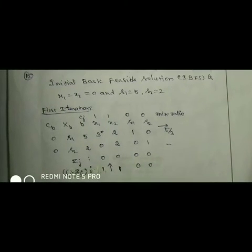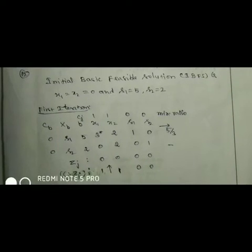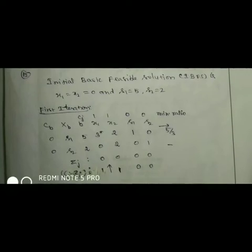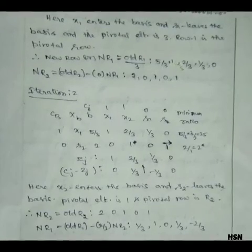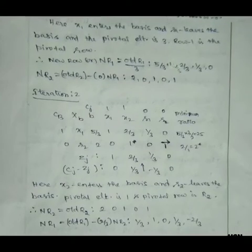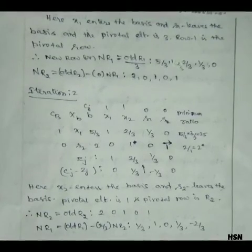The initial basic feasible solution is x1 equal to x2 equal to 0, s1 equal to 5, and s2 equal to 2. In the first iteration of the simplex table, the values of cj minus zj are verified. Choosing the most positive value, x1 is selected as the entering basic variable and s1 is the leaving basic variable. The pivotal element is 3 and r1 is the pivotal row. To move to the next iteration, we calculate nr1 as old r1 divided by 3, and nr2 using the formula old r2 minus 0 times nr1.